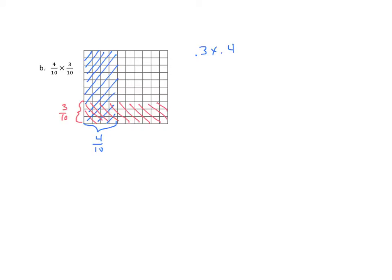So I have again, 4 tenths times 3 tenths. And we say that's equal to 4 times 3 over 10 times 10. If I multiply 4 times 3, I get 12. 10 times 10 is 100. And I could give the decimal form of that. I could say 12 hundredths. So we're going to go back up to the top where we have 3 tenths times 4 tenths equals 12 hundredths.